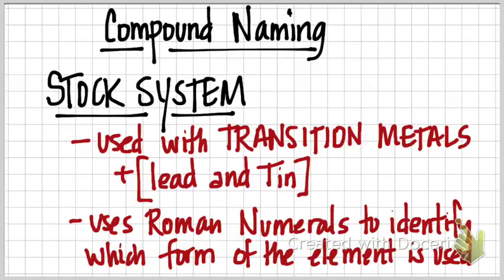Transition metals are the D-block metals, groups 3 through 12 on the chart. The stock system is used when your first element is a transition metal or if it's lead or tin, which are some exceptions.